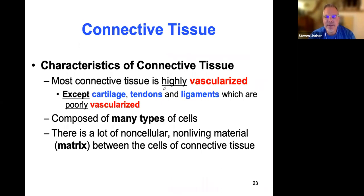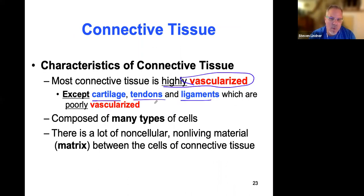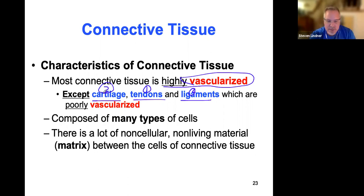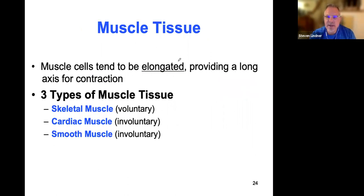Connective tissue is highly vascular, with the exceptions of cartilage, tendons, and ligaments. In order of blood supply: tendons have the best, ligaments second, and cartilage is the most avascular. I'll take a break here, and when I come back we will talk about the three types of muscle tissue.